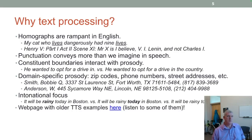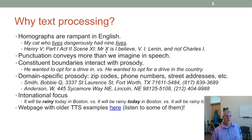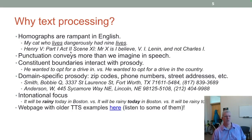Why do we have to do text processing? Homographs are rampant in English. For example: 'My cat who lives dangerously had nine lives' — those are homographs of 'lives.' What about abbreviations like 'Henry V'? People say 'Henry the Fifth,' not 'Henry V.' Parsing those out correctly and converting them into the correct form is important to create human-like speech. If the TTS system were to say 'Henry V Part I Act II,' it would throw the listener off — whereas 'Henry the Fifth, Part One, Act Two' makes sense.